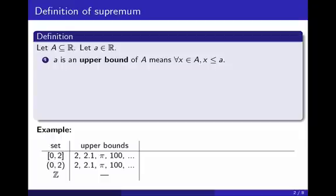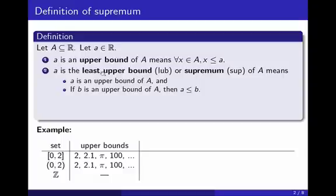And that is the definition of supremum. The supremum is the smallest of all the upper bounds, which is why it is also called the least upper bound. The least upper bound, or the supremum, is a number which (1) is an upper bound, and (2) it is the smallest of all of them. Or in other words, if I find any other upper bound, then a must be less than or equal to it.